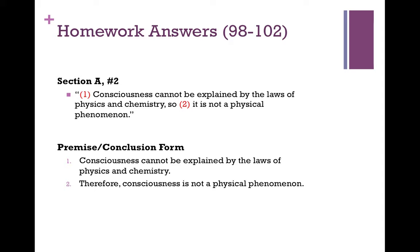The assumption of this argument would be something like: all physical phenomena can be explained by physics and chemistry, or if something can't be explained by physics and chemistry, then it's not a physical phenomenon. But we weren't looking to identify the implicit premise in this argument. The diagram for this is quite simply one, down arrow, two.